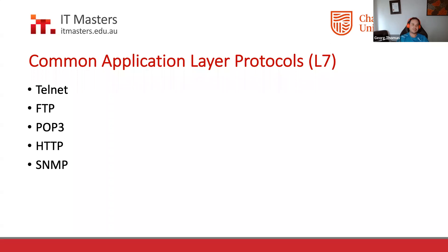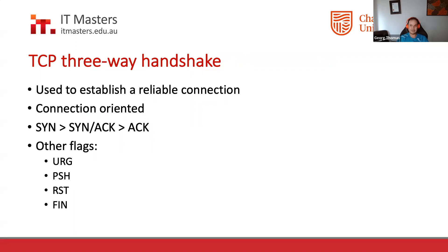TCP is probably going to play a big part. One of the key things around TCP is the three-way handshake. TCP is a connection-oriented protocol used to establish a reliable connection. The three-way handshake occurs when a TCP connection is established: a SYN flag is sent to the destination, the server responds with a SYN-ACK flag, and then an ACK comes back — at that point the handshake is established.